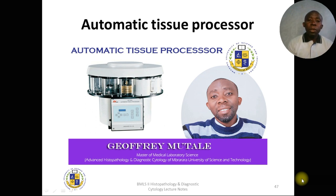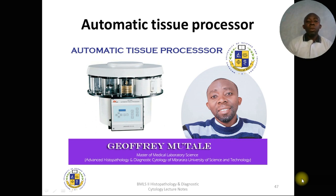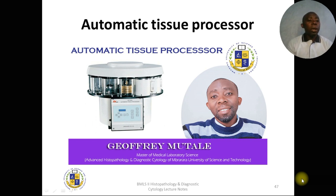In the first type of tissue processor, the tissue in the cassette moves from one bucket to another, taking it through the process. One of the beakers contains formalin for fixation, then the tissue moves to dehydrants — the alcohols — then to xylene for clearing, and finally to an infiltrating agent, which is molten wax.